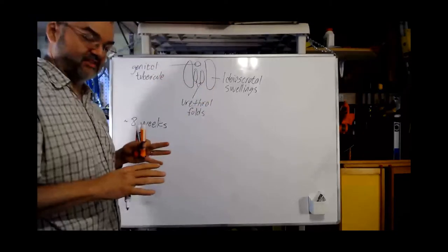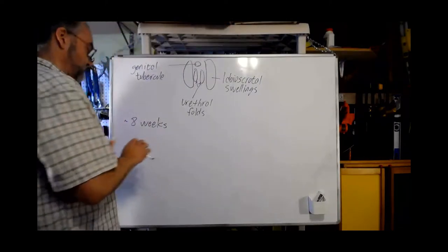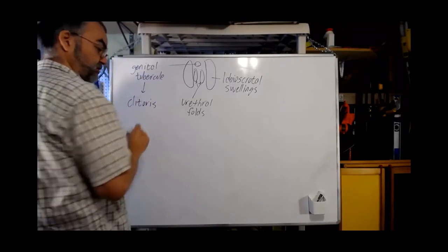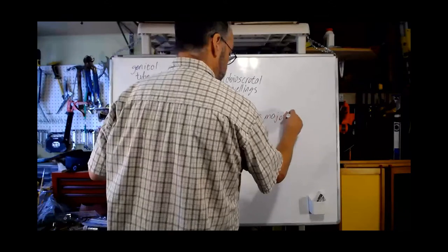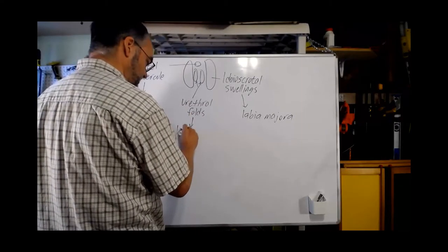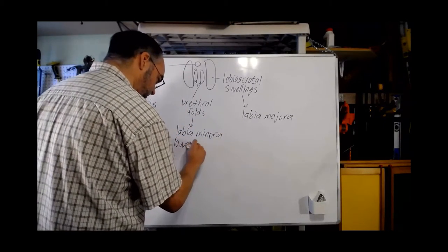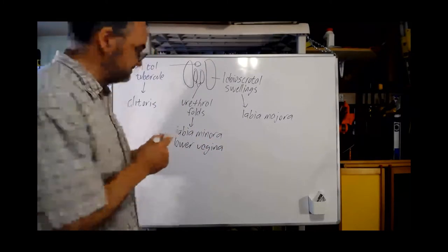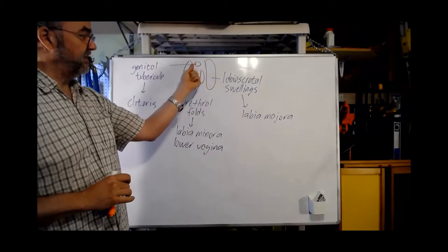Everyone starts with these sets of structures. In the absence of any other signal, the default pattern is that the genital tubercle becomes the clitoris, the labioscrotal swellings become the labia majora — the outer lips of the vulva — and the urethral folds become the labia minora, the inner lips, and the lower vagina, which then connects to the upper vagina that came from the Mullerian ducts.